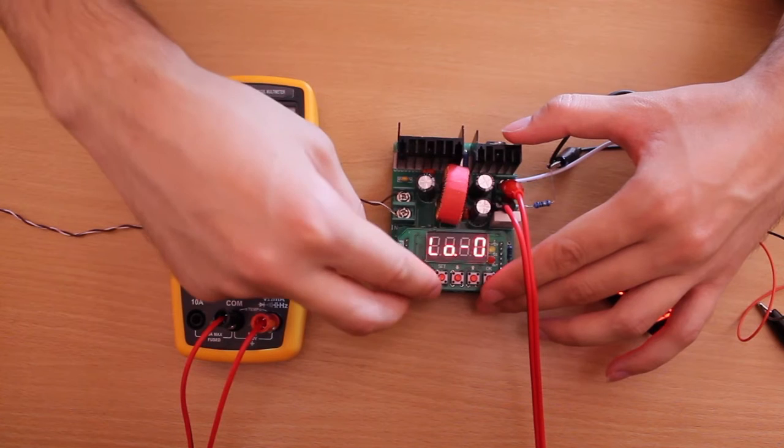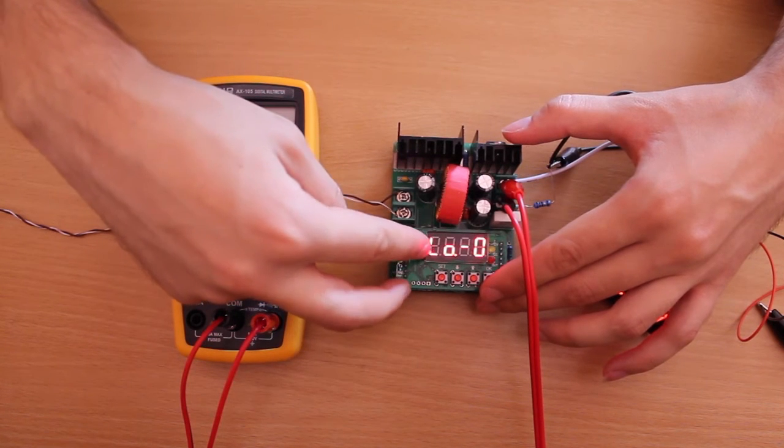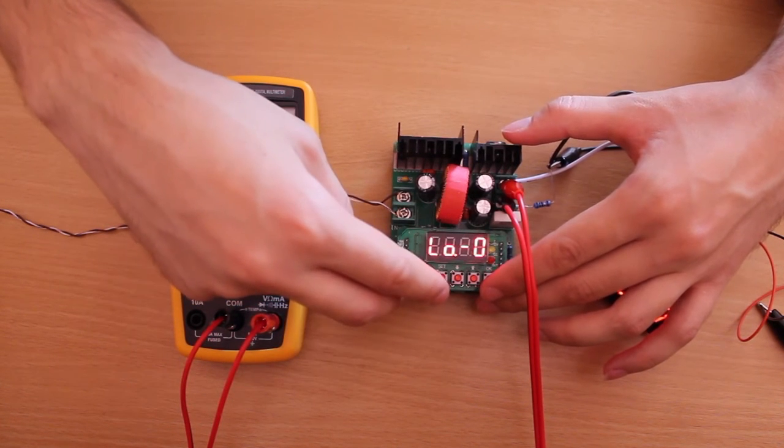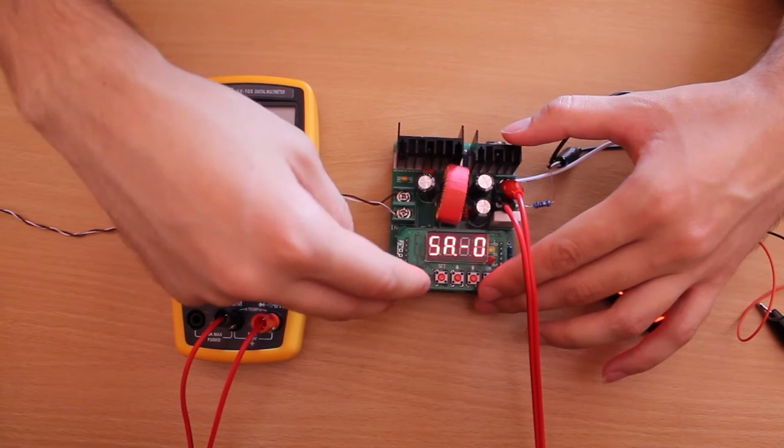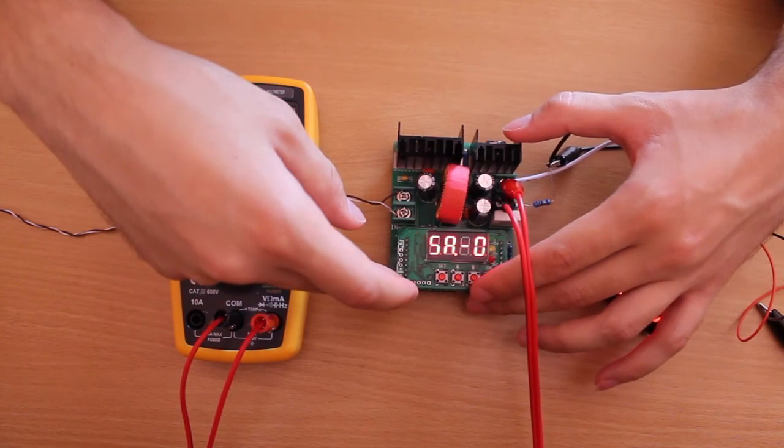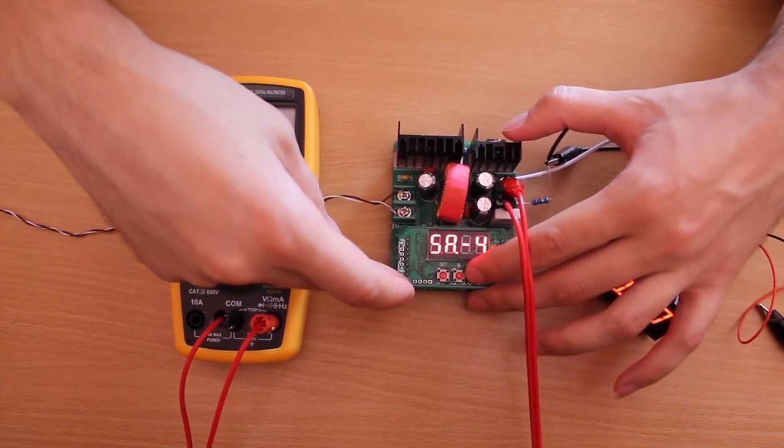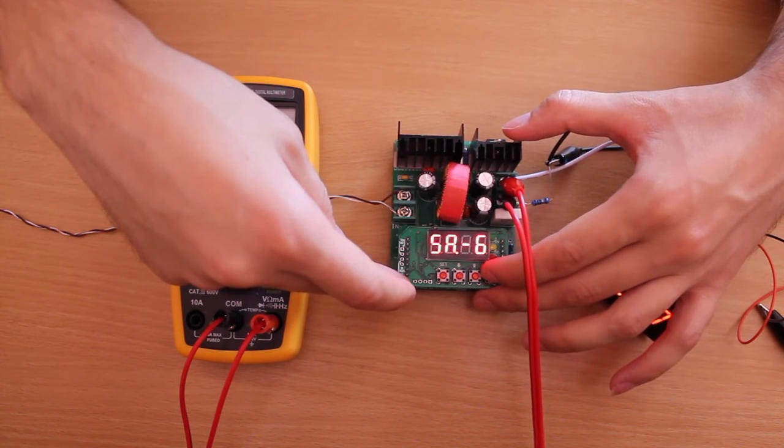And if we press SET again. This is the location from where we bring up settings. And this is where we save. So, let's go to memory location 6. And we press OK.